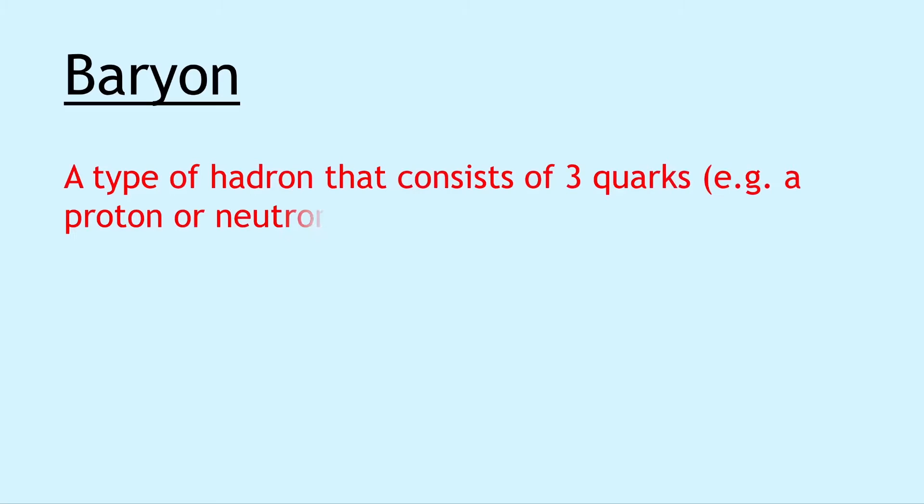Which brings us to the baryon, a type of hadron that consists of three quarks, for example a proton or neutron. Baryons are stable particles. Remember, protons are made up of two up quarks and one down quark, and a neutron is made from one up quark and two down quarks.